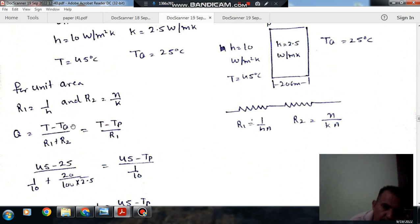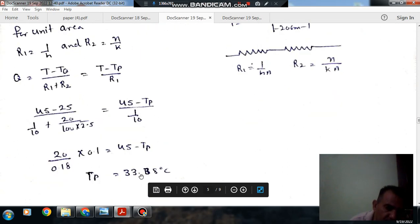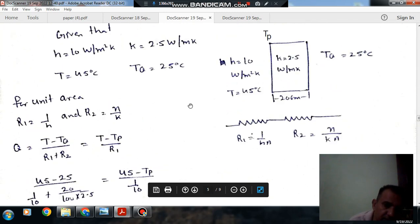TQ is 25, T is 45, R1 is 1 by H, R2 is X by K. Putting these values in, you can find TP equals 33.88 degrees Celsius.